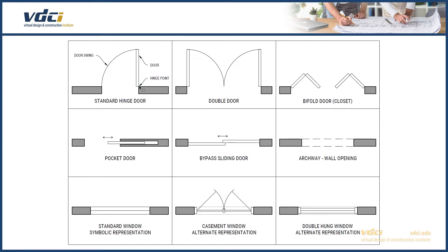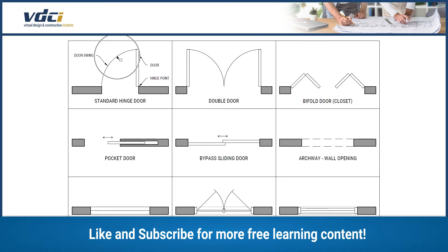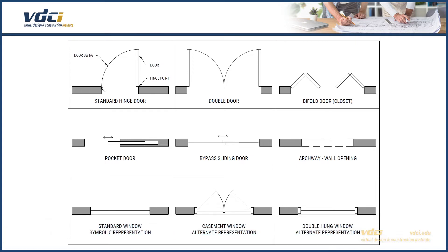This is where the door touches the wall, and this is the swing of the door as it closes. This is representative — we're typically using a standard width of one and a half or one and three quarters of an inch for the width of the door, but we always show the hinge point and where the door closes.